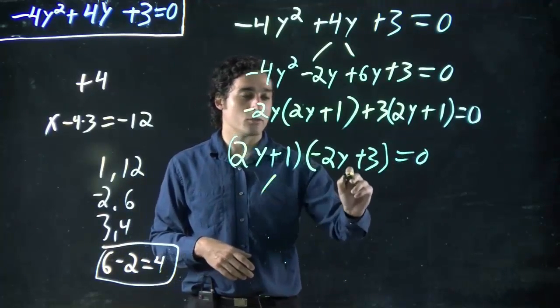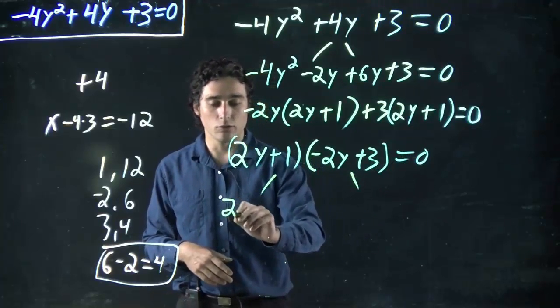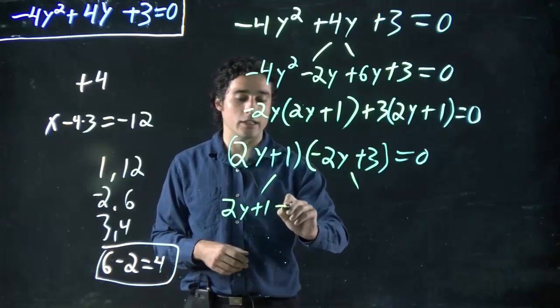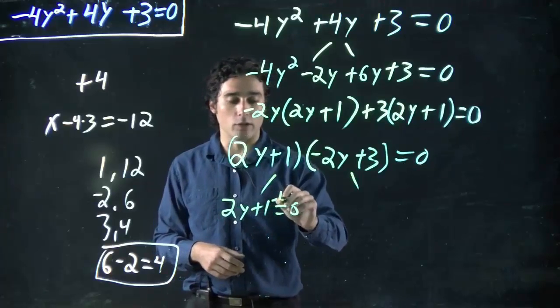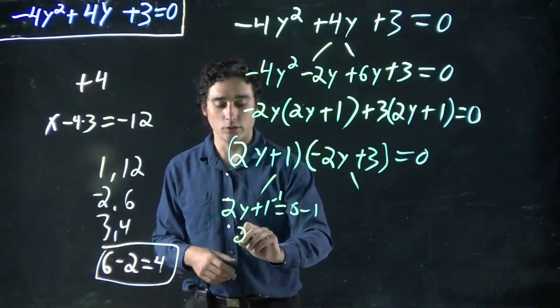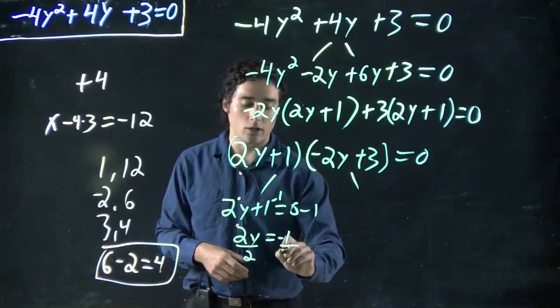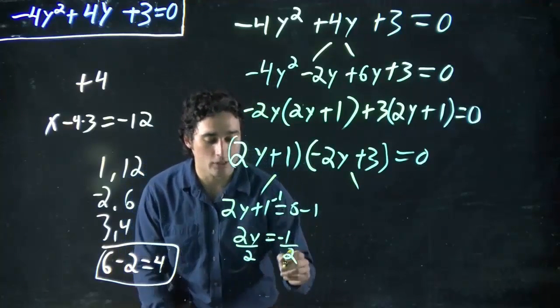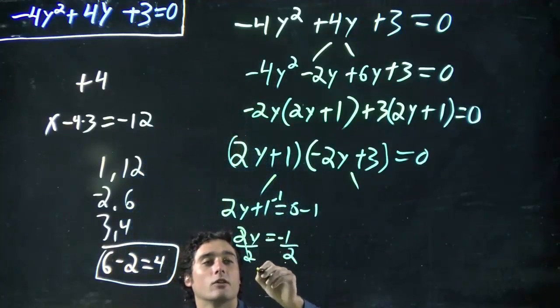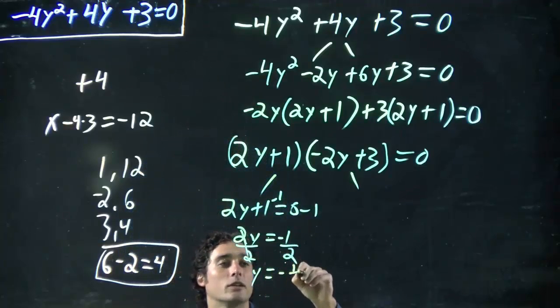2y + 1 = 0. Subtract 1 from both sides. 2y = -1. Divide both sides by 2. Always trying to get y on its own. We want it to be lonely. So y = -1/2.